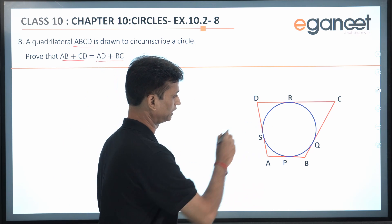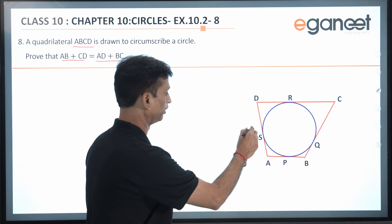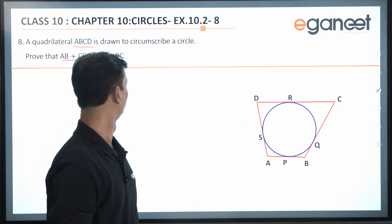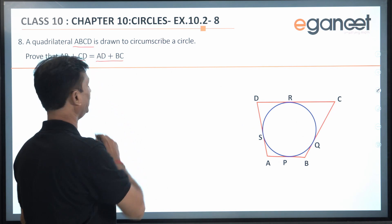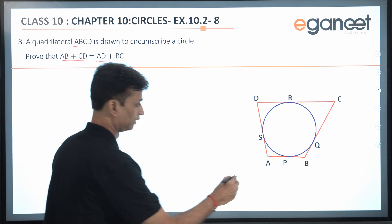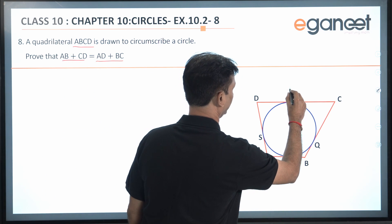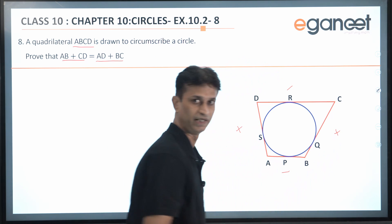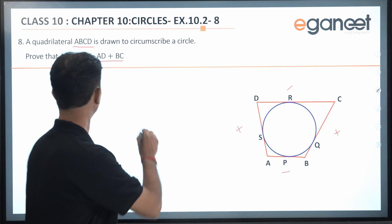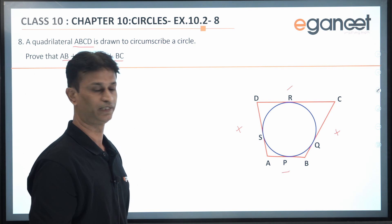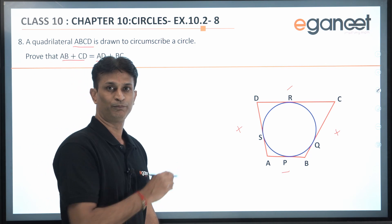So here, a circle is given and a quadrilateral ABCD is circumscribing the circle. What we have to prove: AB + CD = AD + BC. We have to prove that the sum of the opposite sides are equal.